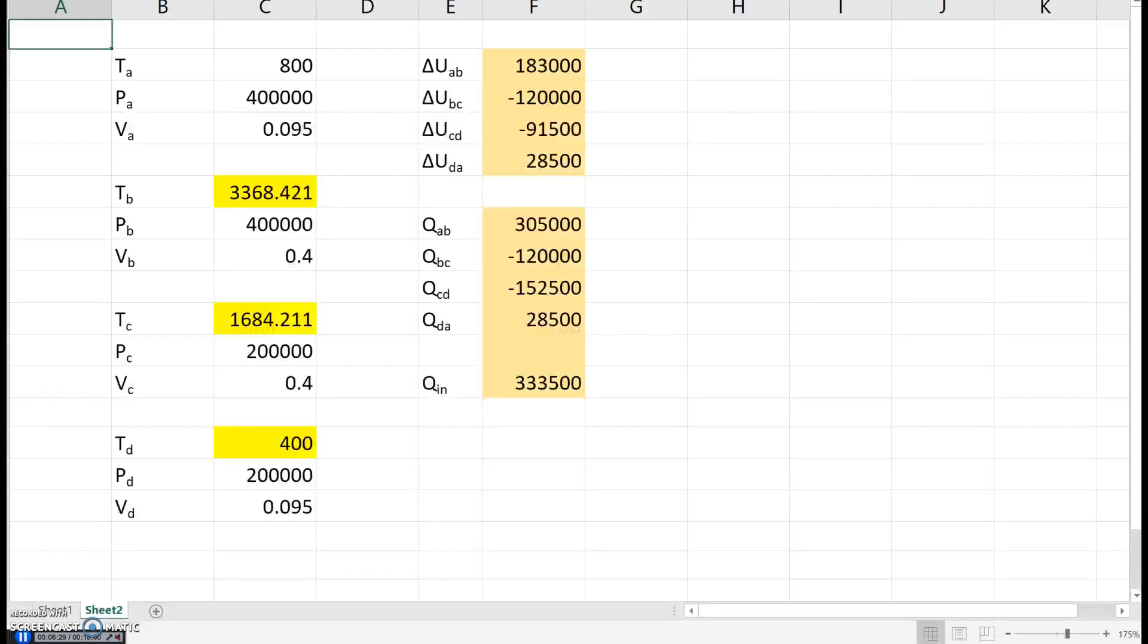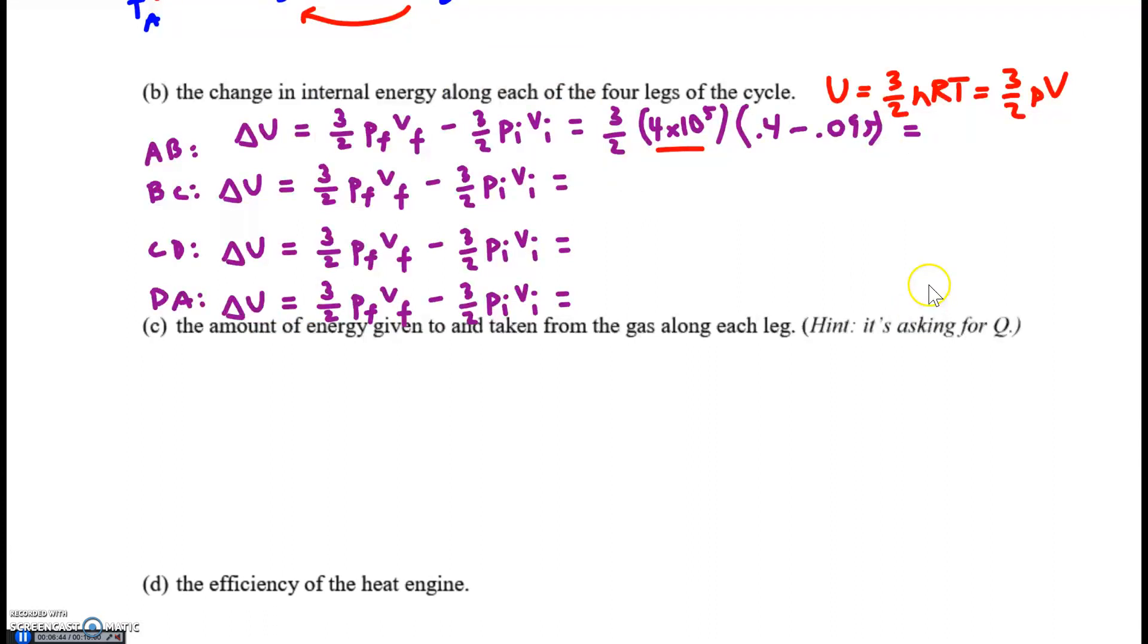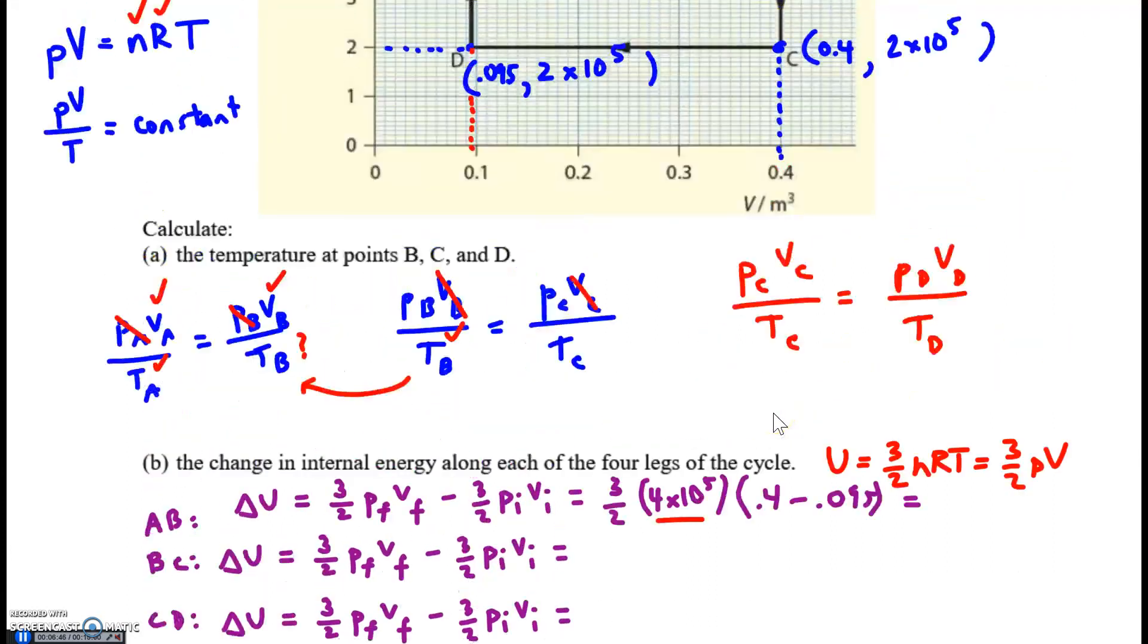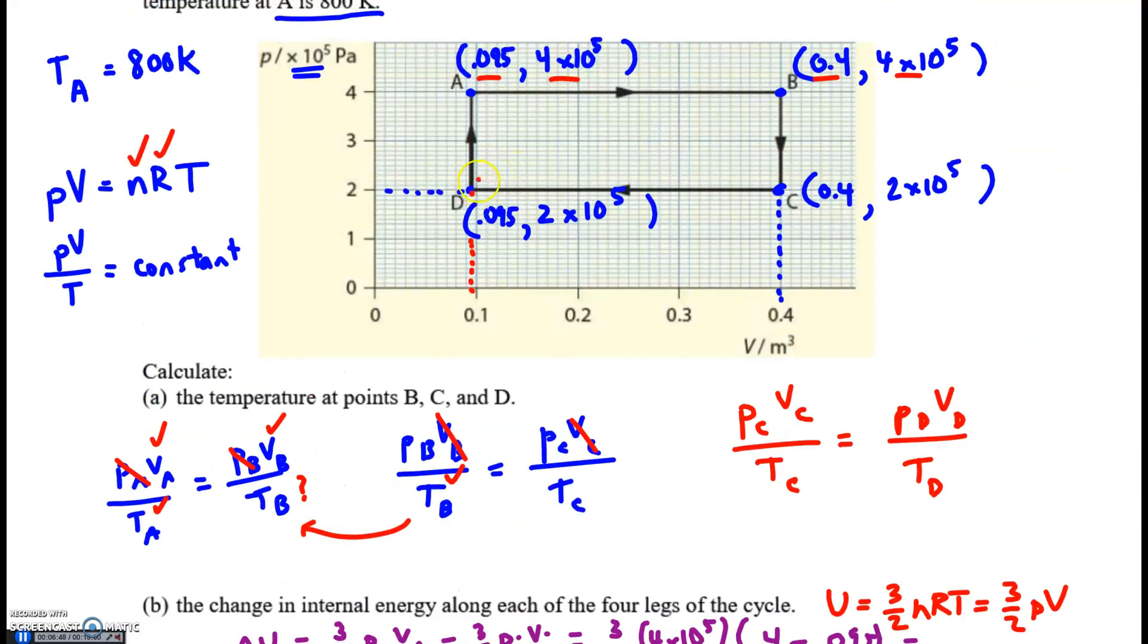We get our answers, and it comes to these. Here are the values we get. Be careful, make sure you subtract the correct value. Like on CD, it should become a negative answer, because from C to D your final volume is 0.095, your initial is 0.4, so it should come out negative.